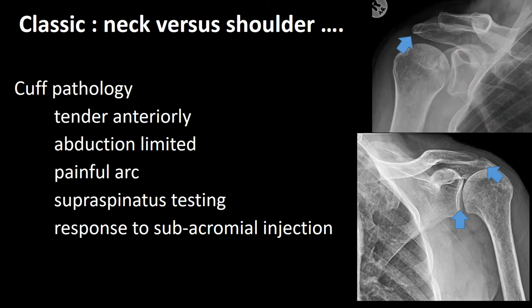The x-ray on the right confirms the superior migration of the humeral head due to the loss of the cuff's normal downward function. There may be reduced subacromial space. In the x-ray above, you can see the so-called eyebrow sign, which is a sclerosis underneath the acromion indicating early impingement.